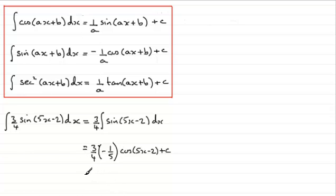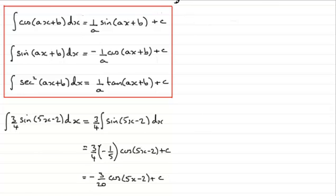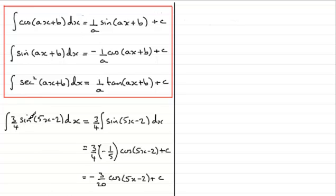Tidying this up, we end up with minus 3 twentieths of cos(5x − 2) plus the constant of integration c. That's a fairly straightforward example. The same kind of thing applies if you've got a cosine or sec squared — just pull out your constant and use the relevant formula.